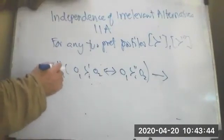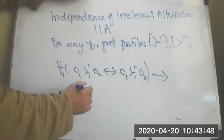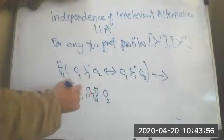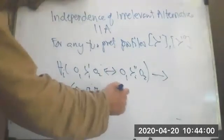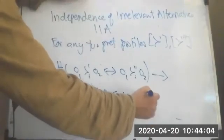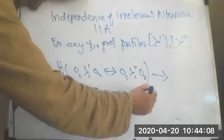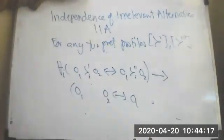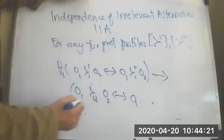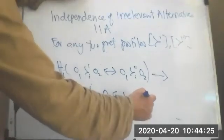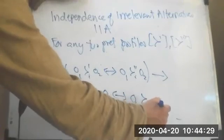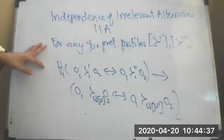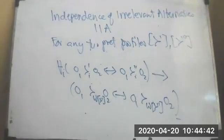if and only if O1 is preferred by the welfare function W for this preference profile and O1 is preferred by W for the other preference profile. So that's Independence of Irrelevant Alternatives. If and only if you will do this, that's it. Thank you.